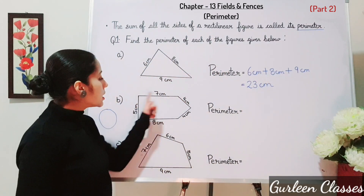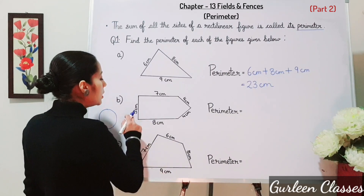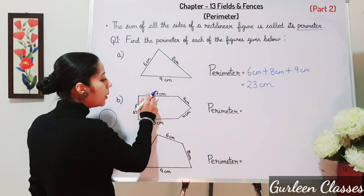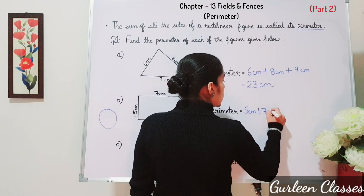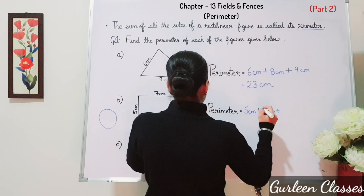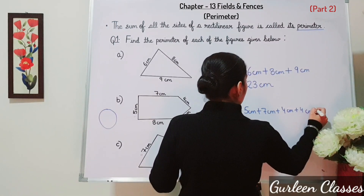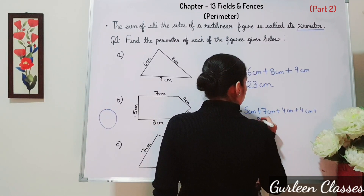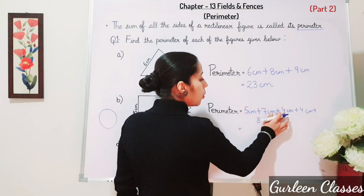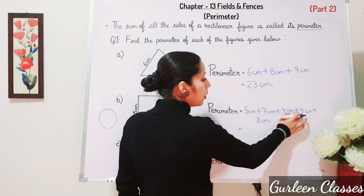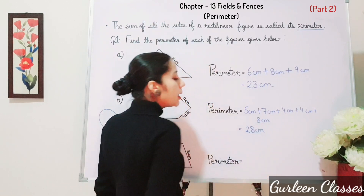Now part B — this is the length of the boundary. Let us add all the sides given: 5 cm plus 7 cm plus 4 cm plus 4 cm plus 8 cm. 5 plus 7 is 12, plus 4 is 16, plus 4 is 20, plus 8 is 28 centimetres.